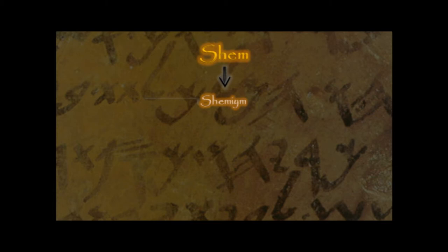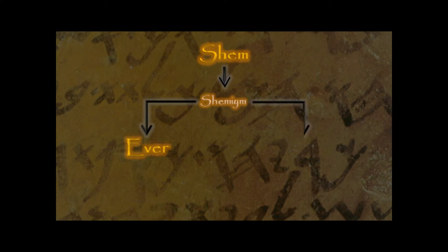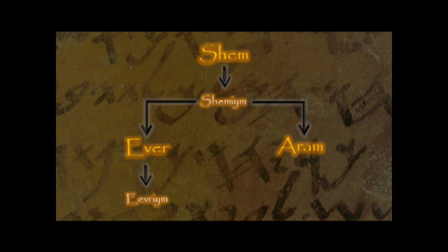In Genesis chapter 10, we are introduced to Shem's descendants, including Eber — in Hebrew, Ever — and Aram. The descendants of Ever are called Hebrews, Ivrim in Hebrew. And the descendants of Aram are called Arameans, Aramim in Hebrew.